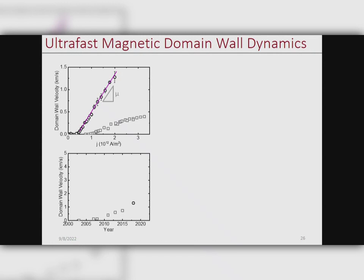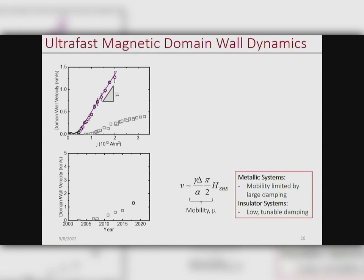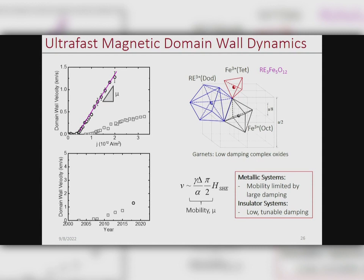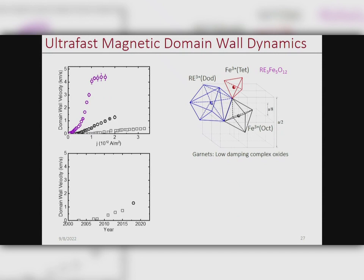What really limits the motion of metallic domain walls is their mobility. If you look at the velocity expression, one of the key terms is the Gilbert damping. Metallic systems, because of their conducting electrons, really suffer from large damping, so their mobilities are quite low. Fortunately, this is where oxides come into play — certain oxides, particularly garnet oxides, are very famous for their low damping. By carefully designing these oxide systems in heterostructures, we can drive domain walls so fast that the plateau we see is not the same plateau as in ferromagnets — I'll argue it's actually a relativistic limit.